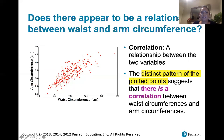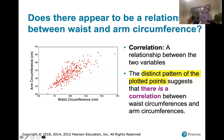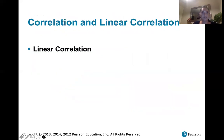This distinct pattern of plotted points suggests that there is a correlation between waist circumference and arm circumference, because as you look at it from left to right, arm circumference tends to go up as waist circumference tends to go up. That pattern suggests a correlation, or a relationship, between the two variables.